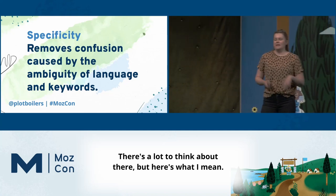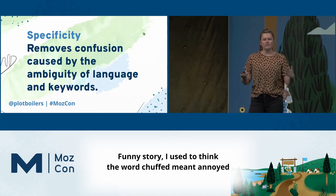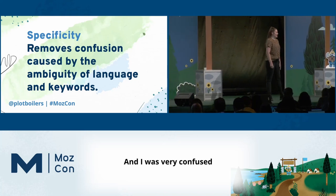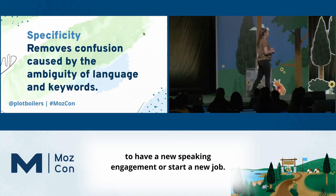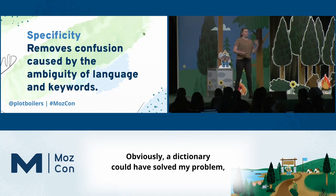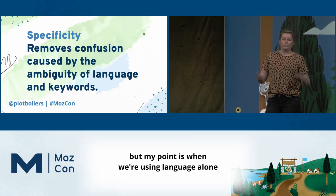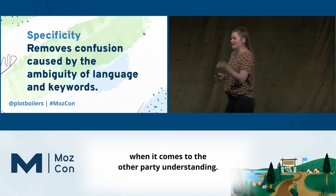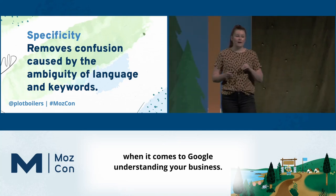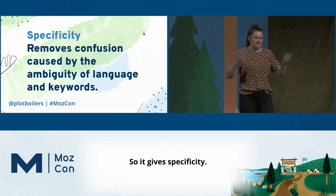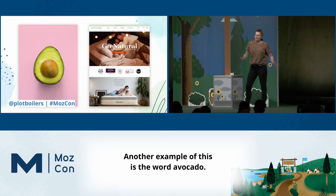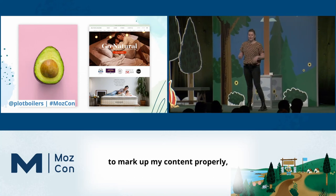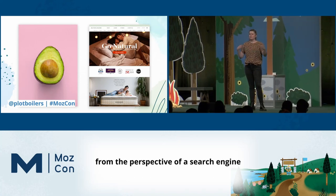Here's what I mean. I used to think the word 'chuffed' meant annoyed because it's a colloquialism I didn't grow up hearing. Obviously a dictionary could have solved my problem. My point is: when we're using language alone to assign value or describe something, there's always a margin for error in the other party's understanding. Structured data removes that margin for error when it comes to Google understanding your business. Another example: if I'm talking about avocado all over my website, I could be talking about the fruit or the mattress brand. But if I use structured data to mark up my content properly, there is zero ambiguity from a search engine's perspective.